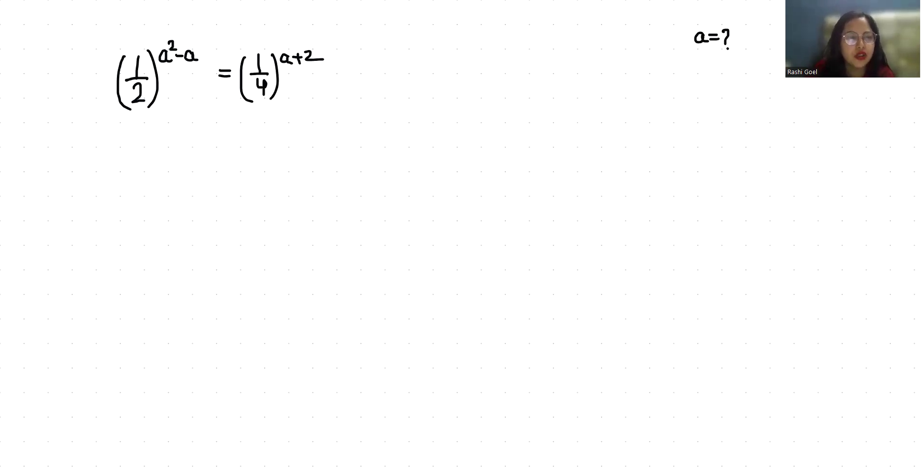So let's start with today's video solution. So (1/2)^(a²-a) = 1/4, I can write it as 2 square, 1 square a plus 2.